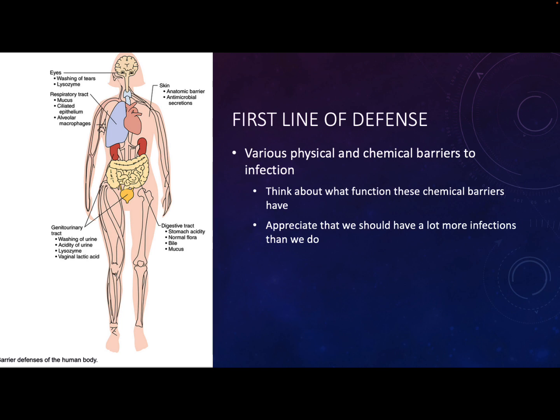This innate immune system is really our first line of defense, and these responses are very, very nonspecific. Even people who are immune compromised have a lot of these features. That would include something like intact skin, which is an awesome barrier to protecting against infection. You have antimicrobial peptides that your body produces. Even in your eyes, the flushing action of every blink helps wipe away microbes. Those secretions — your tears — also produce an enzyme called lysozyme, which breaks down peptidoglycan. It doesn't matter what species; it just attacks peptidoglycan.